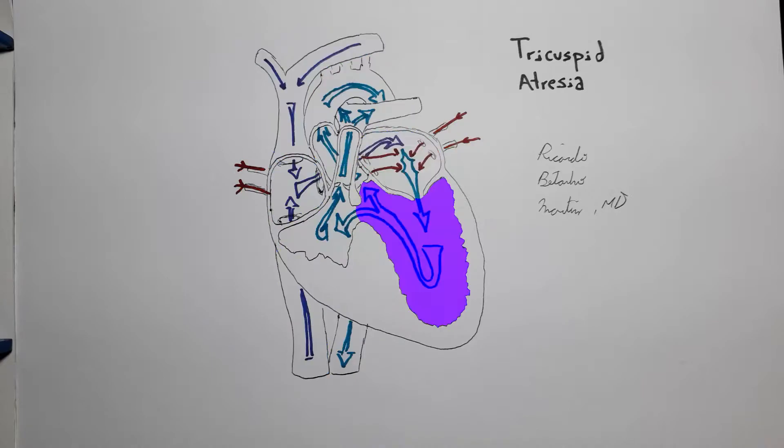The condition is marked by the complete lack of formation or agenesis of the tricuspid valve which normally connects the right atrium to the right ventricle, allowing blood to pass between the two chambers of the right heart.